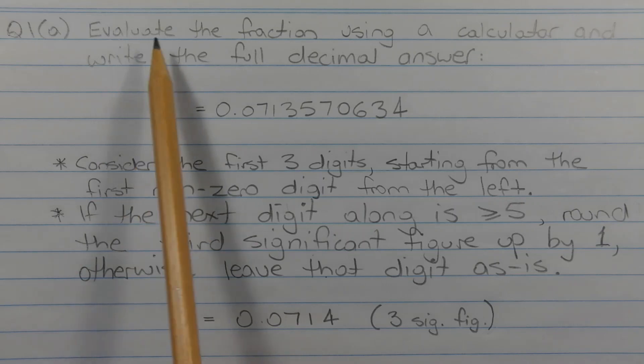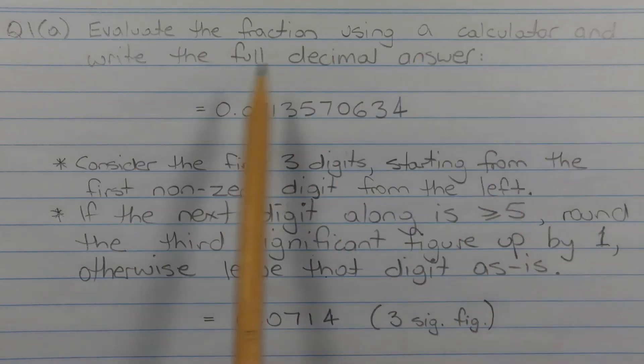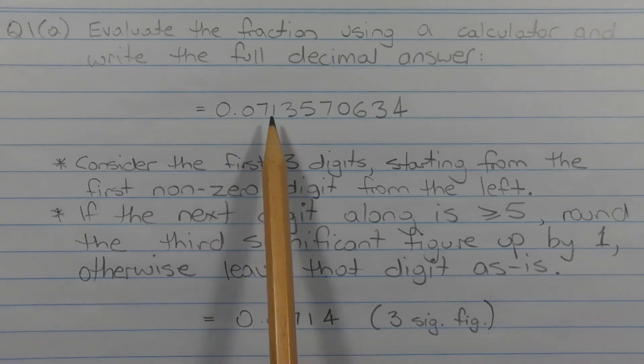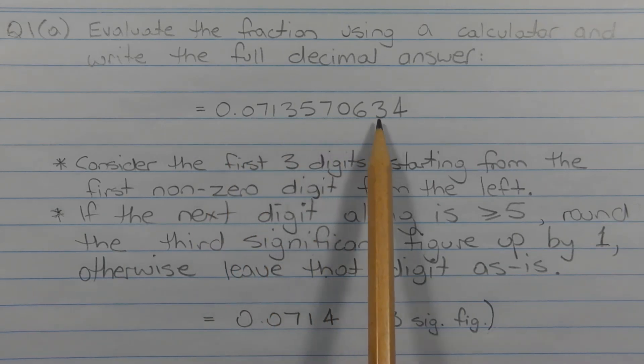The first step is to evaluate the fraction using a calculator and write the full decimal answer that appears on the screen. In this case, it's 0.0713570634.